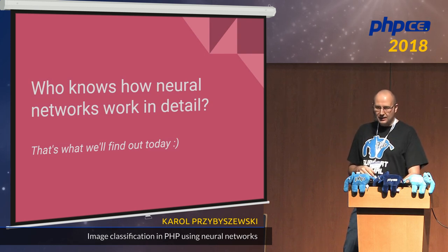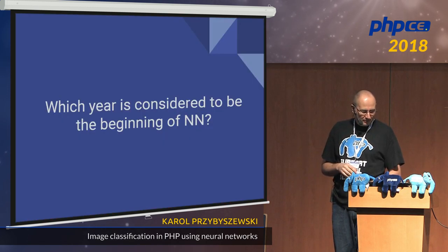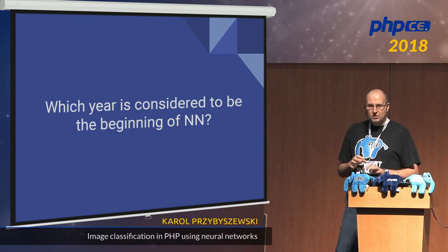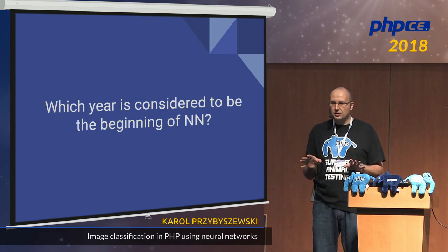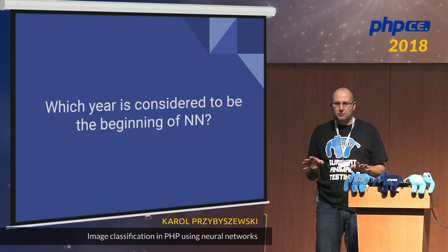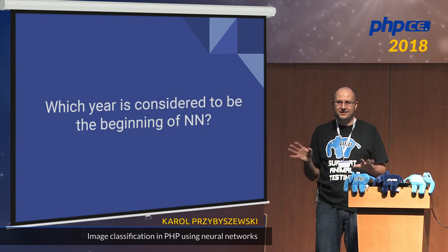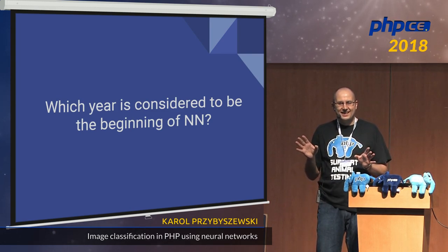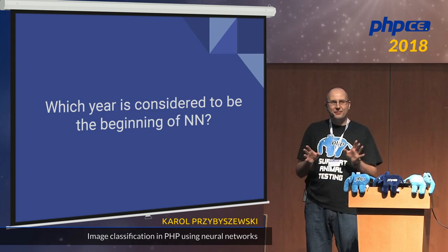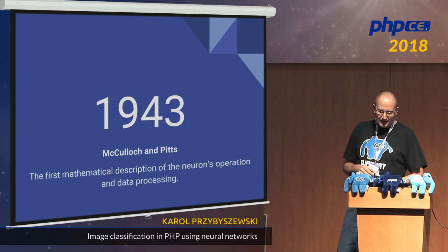The rest of you will find out how it works today. So, which year is considered to be the beginning of neural networks? It was 1943.